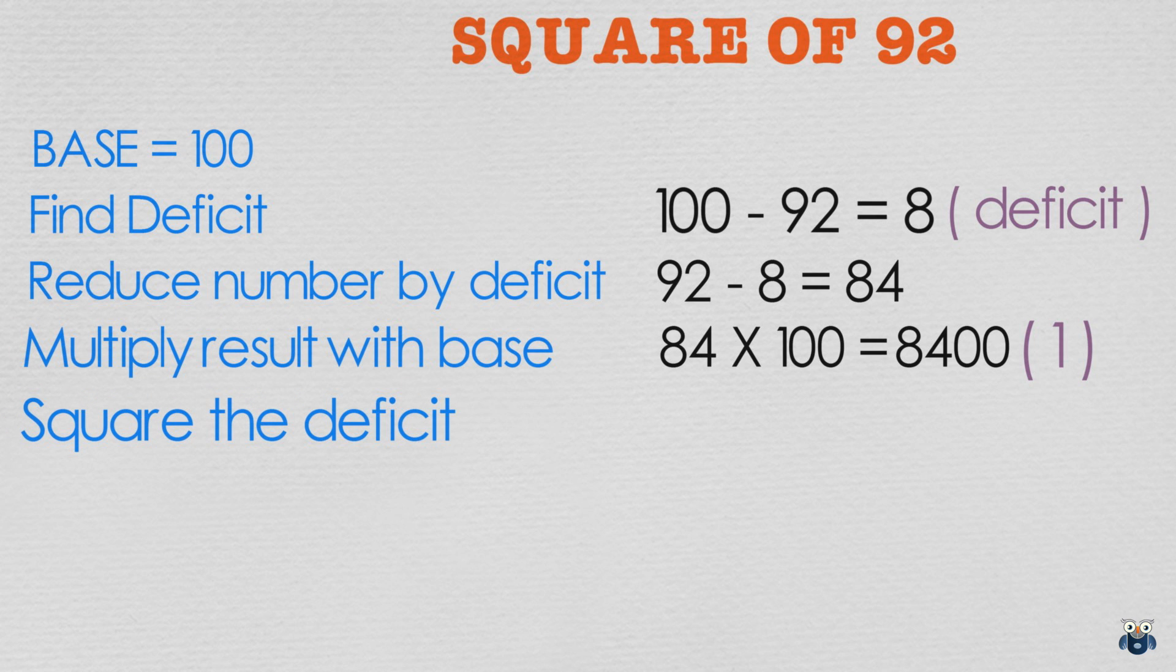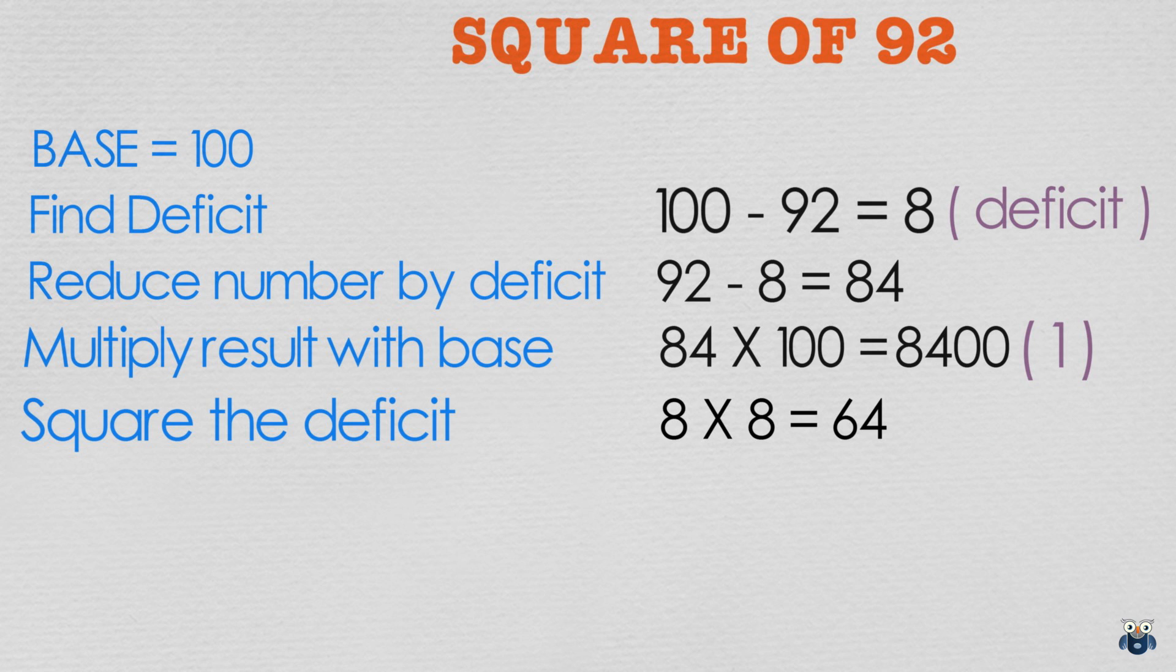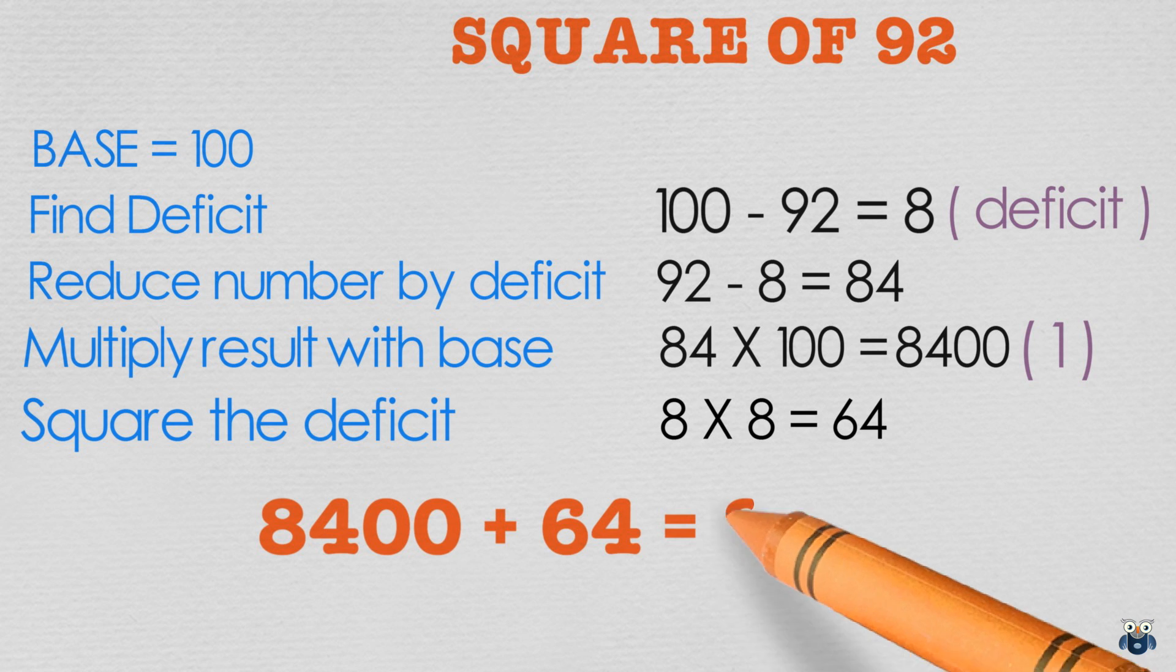We then square the deficit. 8 square is 64. And finally we add both results. 8400 plus 64 is 8464 our final answer.